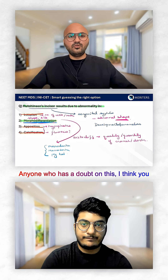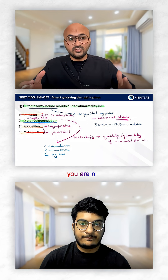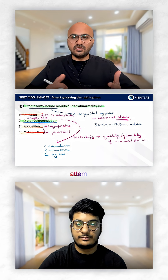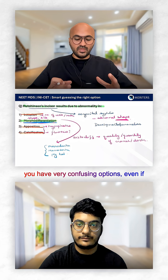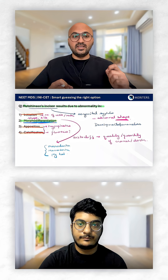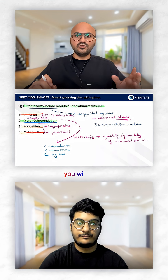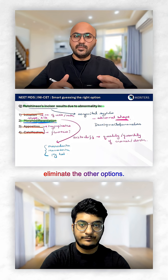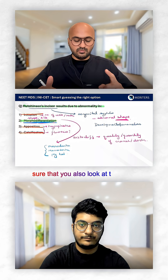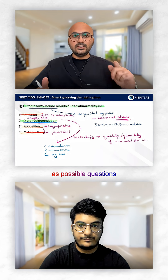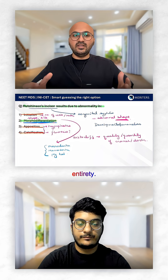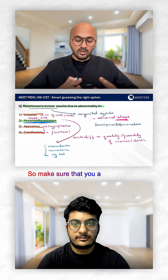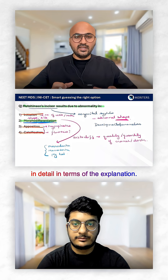Perfect, very well explained. Anyone who has a doubt on this needs more reading. Make sure you are not leaving out basic topics because they lay the foundation for option elimination and strategic attempts. In this kind of question where you have very confusing options, even a little understanding — if you've read the explanation for amelogenesis imperfecta or fluorosis — you will know which anomaly belongs where. Reading explanations is very important because it helps you eliminate other options. When practicing MCQs, make sure you also look at the other options as possible questions so you are covering the subject in its entirety. Don't rush to take one answer and move on — thoroughly read all options and their explanations.